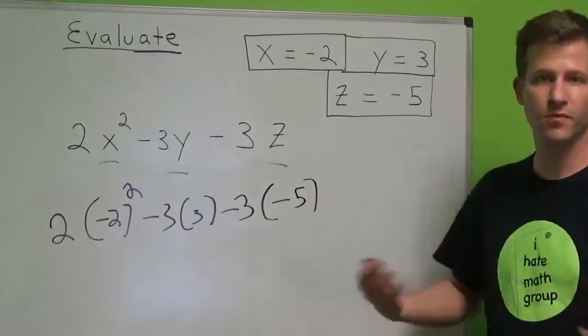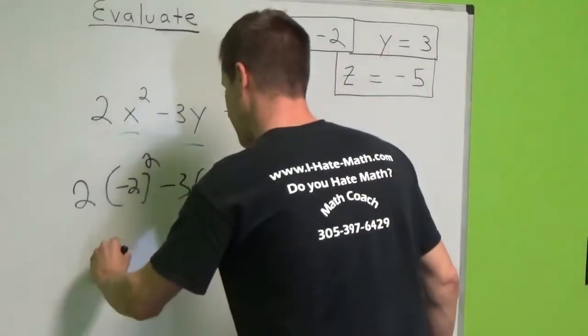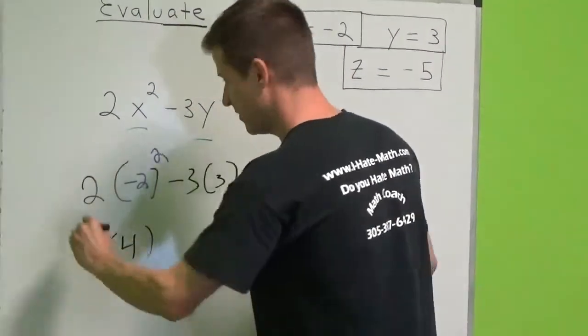Now, we're going to simplify and solve this. Well, negative 2 squared is negative 2 times negative 2, which is what? That's a positive 4. Leave that in parentheses, bring down the 2.